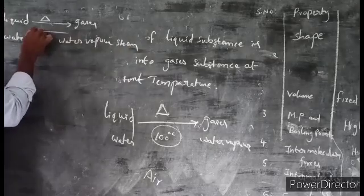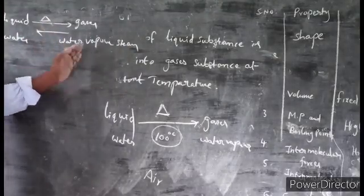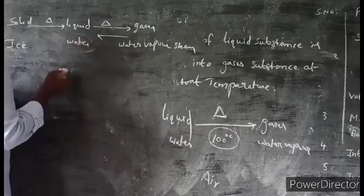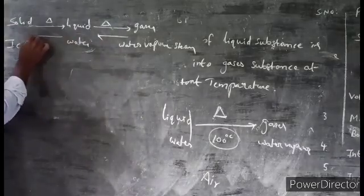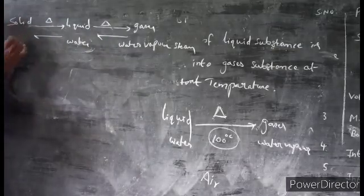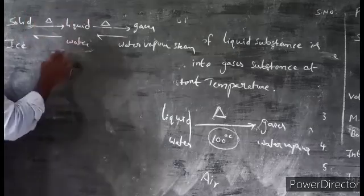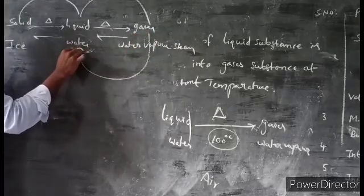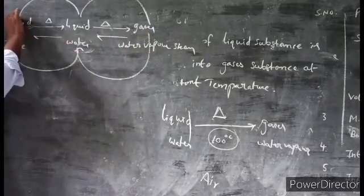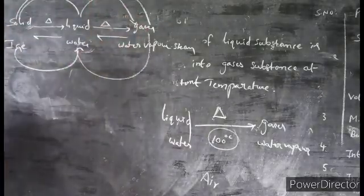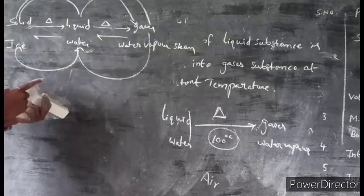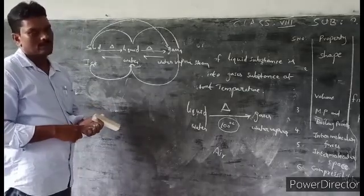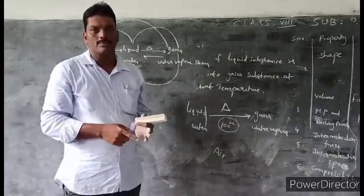The reverse process also exists. The temperature of water vapour gradually decreases and it changes into water. Again, the temperature of water gradually decreases and it changes into ice. So: solid to liquid, liquid to gas, gas to liquid, and liquid to solid. Another process is sublimation — solid directly changes into gas. The processes involved are MP, BP, sublimation, condensation, freezing point, and melting point. These will be explained in the next class. Thank you.